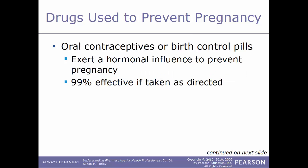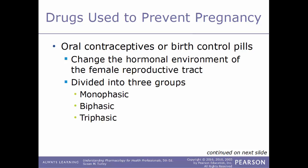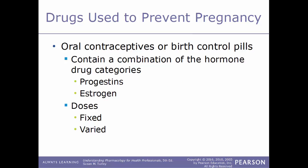The first kind of drug we'll talk about are oral contraceptives, or birth control pills. These exert a hormonal influence to prevent pregnancy and are 99% effective if taken as directed. They act by changing the hormonal environment of the female reproductive tract and are divided into three groups: monophasic, biphasic, and triphasic. Birth control pills contain a combination of hormone drug categories, including progestins and estrogen, and the doses can either be fixed or varied.